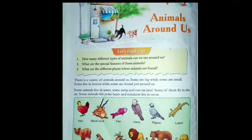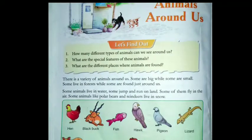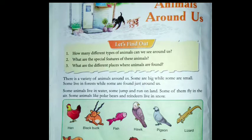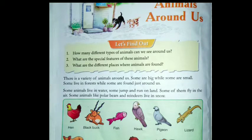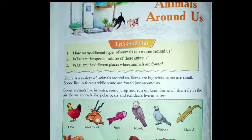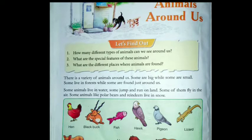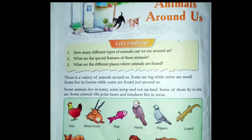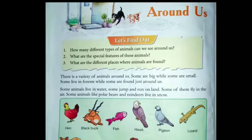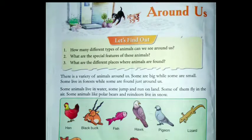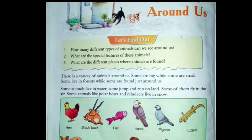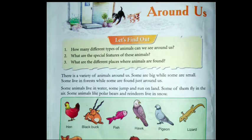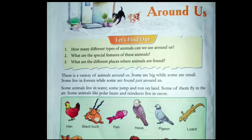Some are big while some are small. Some live in forests while some are found just around us. Some are very small, some live in the jungle, and some live in our house. Some animals are in the water, some are jumping on the ground, some are flying in the air, and some animals like polar bears and reindeer live in the snow.